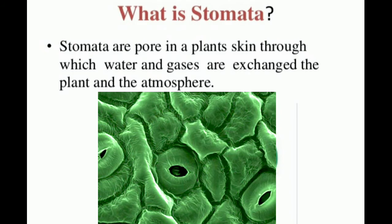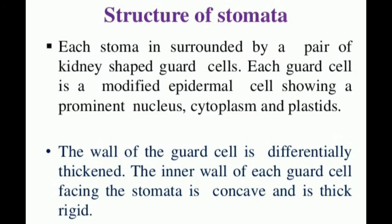During photosynthesis, carbon dioxide enters the leaf and oxygen is released to the outer atmosphere. Gas exchange takes place through small openings on the lower surface of the leaf and on green stems called stomata — singular: stoma. The by-products oxygen and water vapors are released into the air through stomata, and carbon dioxide from the air is also taken in through stomata.